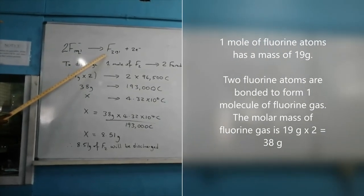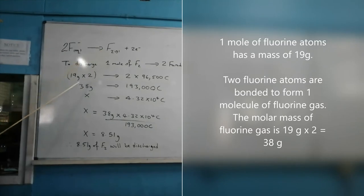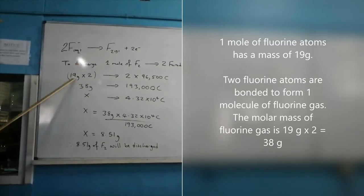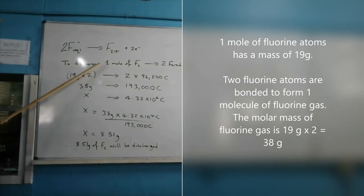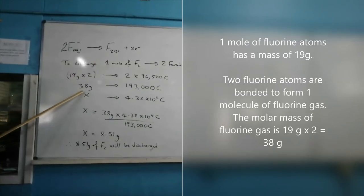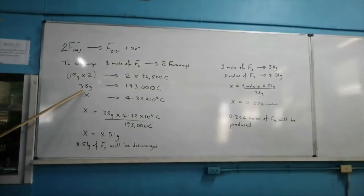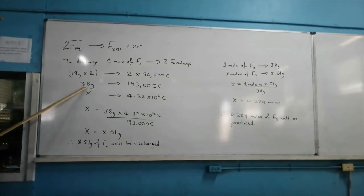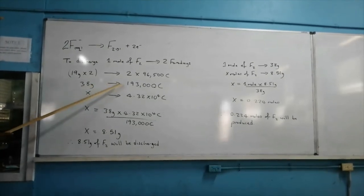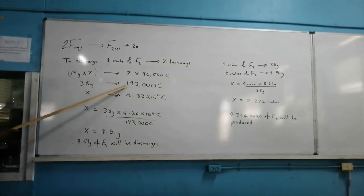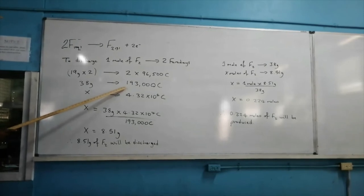1 mole of fluorine gas has a mass of 38 grams — because it is 19 grams for one atom times 2, which gives 38 grams. So 38 grams of fluorine will be produced when 193,000 coulombs of charge flows through the circuit.